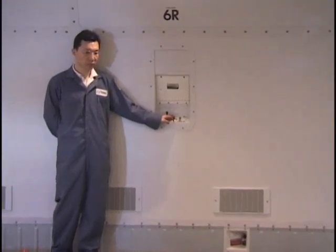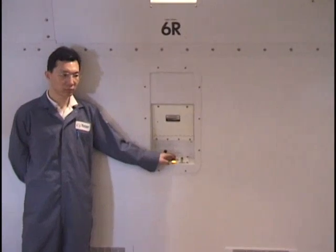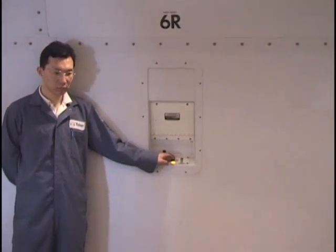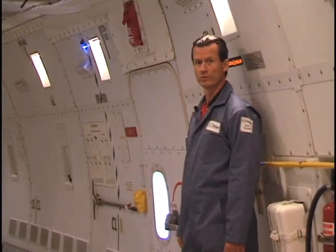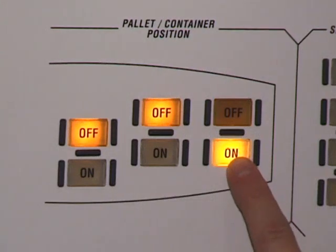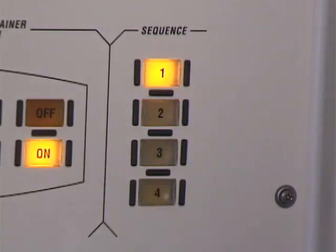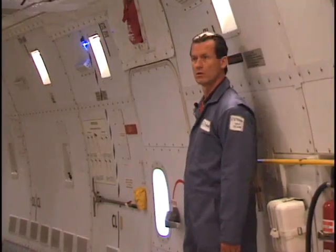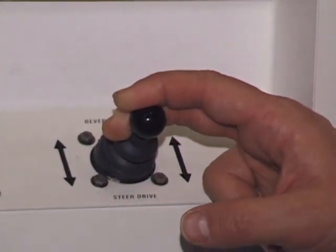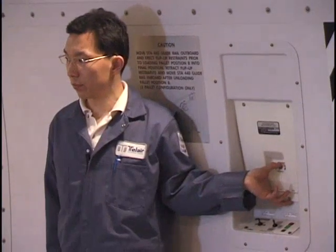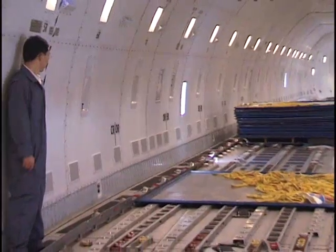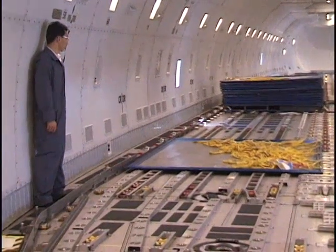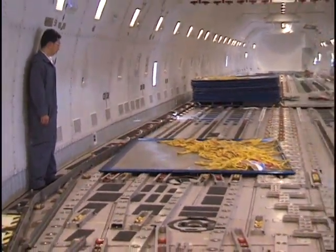The pallet to be loaded in position 1A is brought forward into the aircraft to be aligned with the blue index line. Once the pallet is brought into position and pallet 1A has been turned on, sequence 1A has been activated. Steer drive is commanded both at the auxiliary control panel and at control panel 5R. The pallet will be brought forward into the aircraft and steered into a 90-degree orientation with the aircraft centerline.